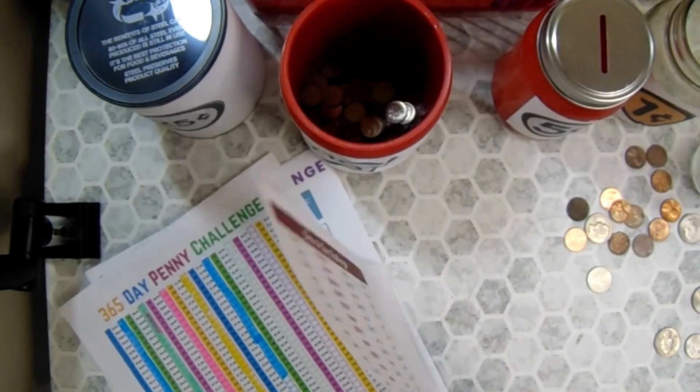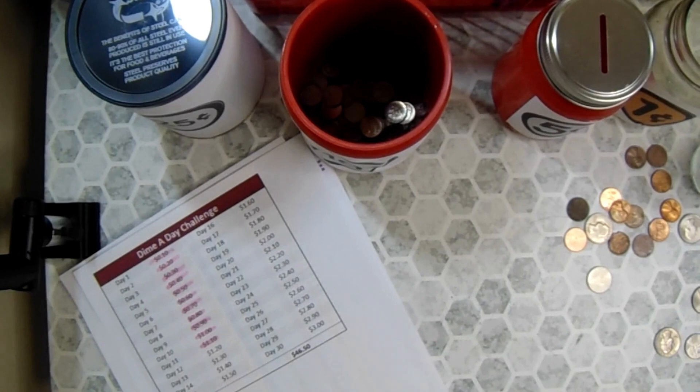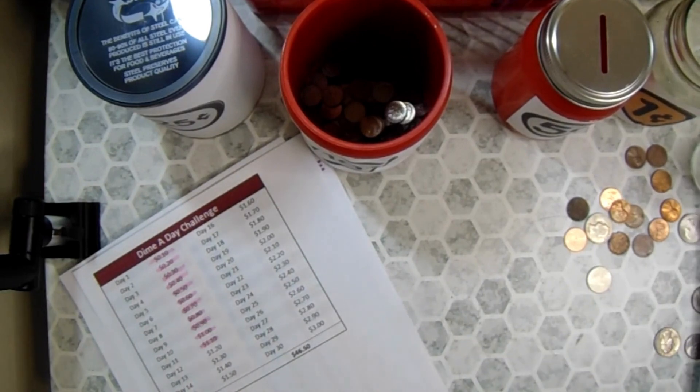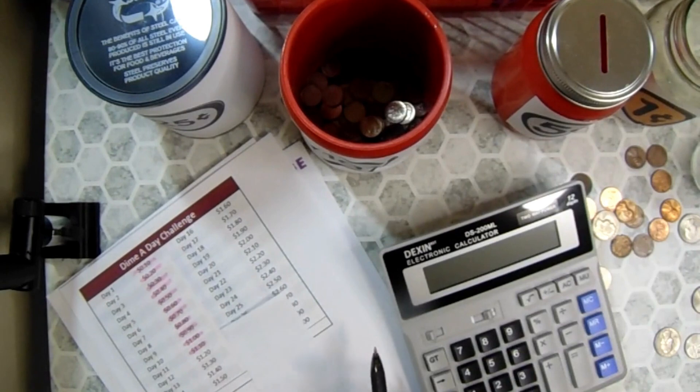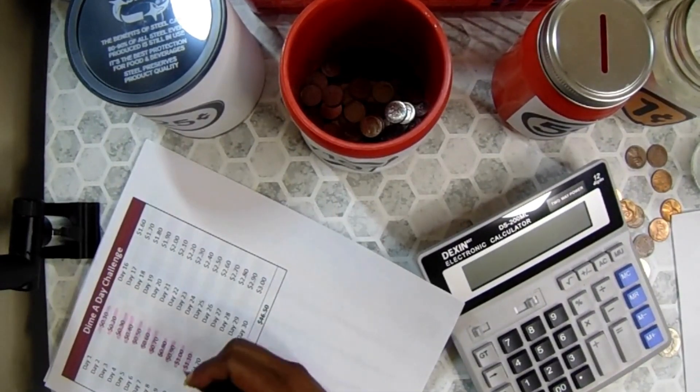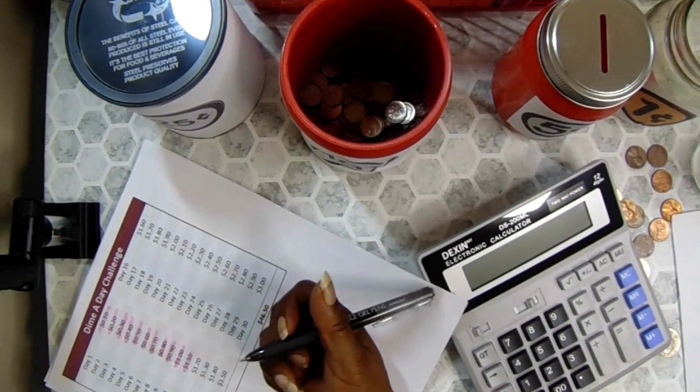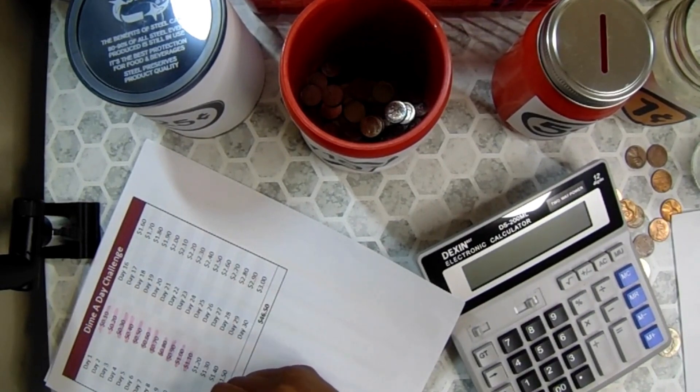And I think what I'm going to do is I want to track this. So give me a second here, grab a piece of scrap paper and let me get my calculator because I do want to keep track of this. I'm going to write today's date, which is 7-15-23.